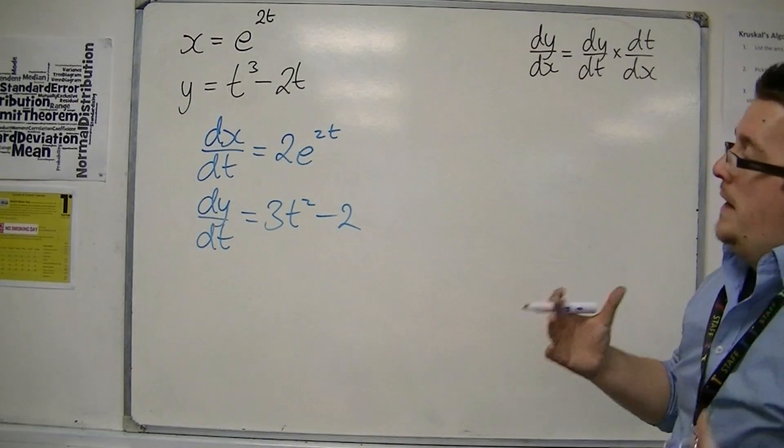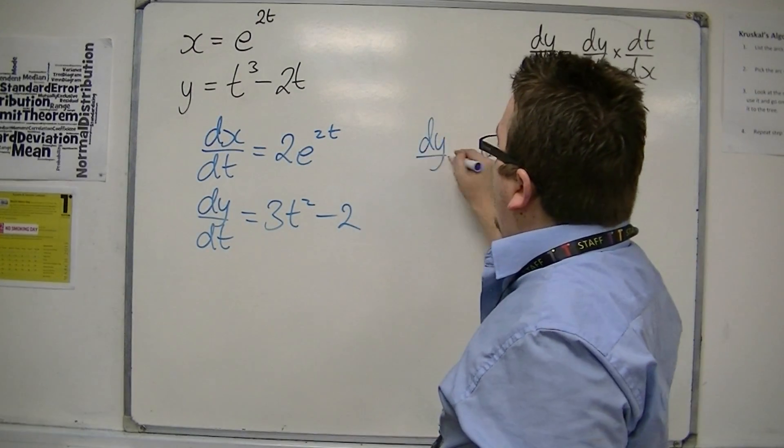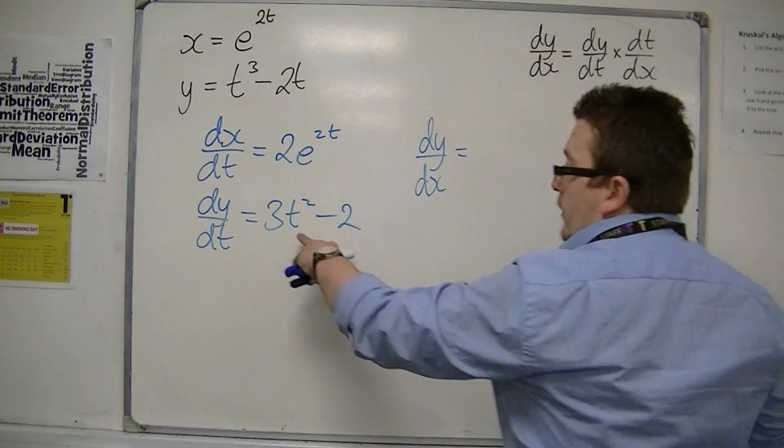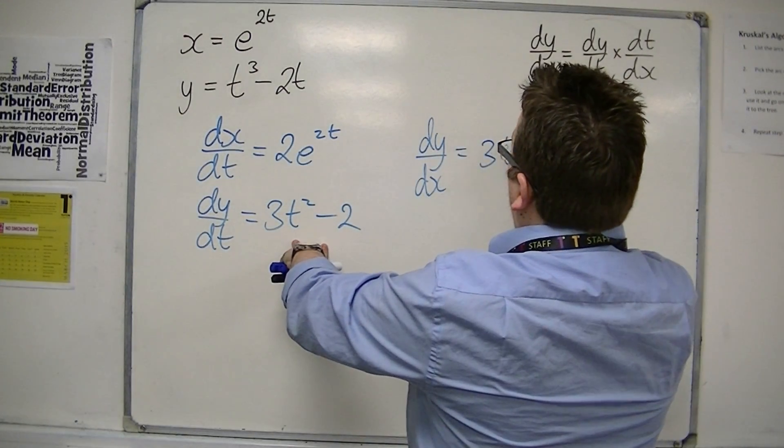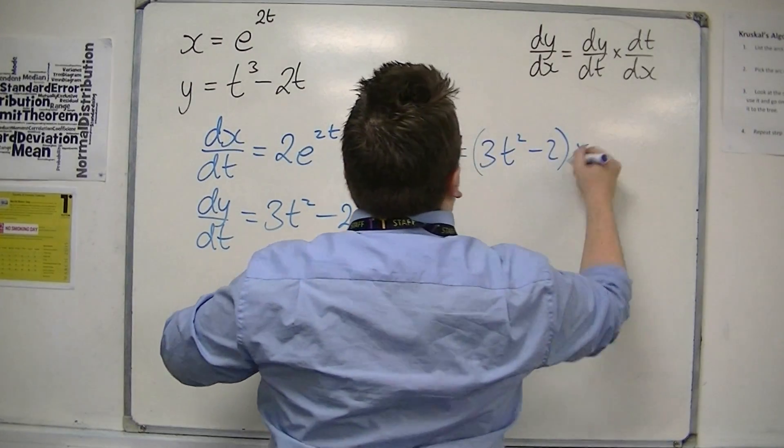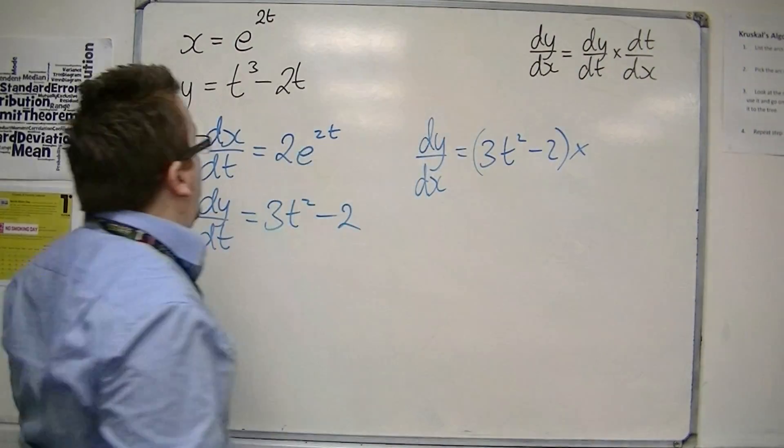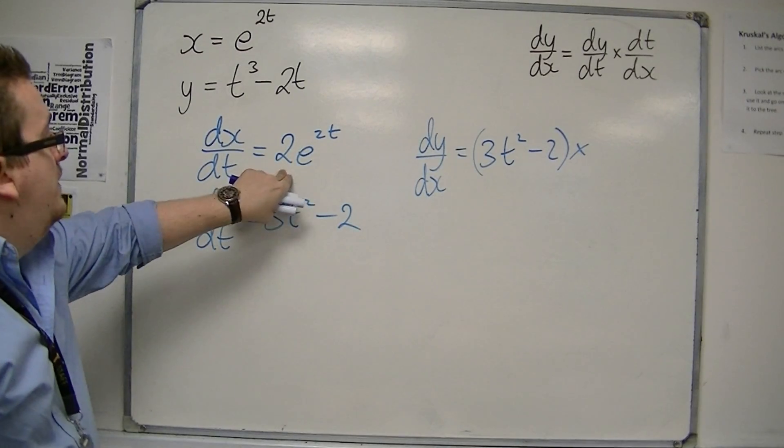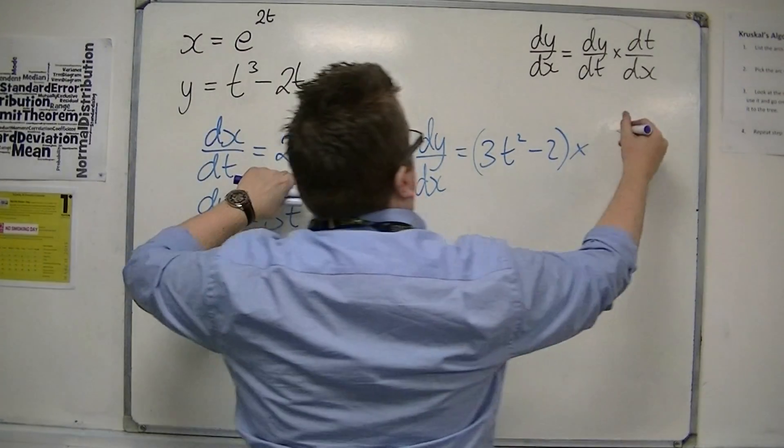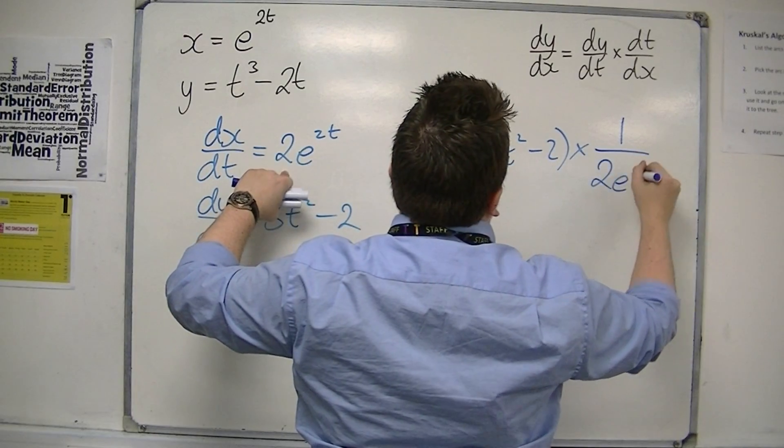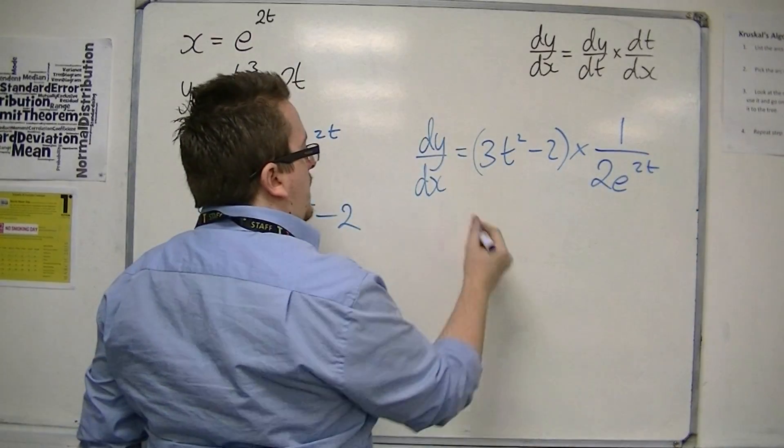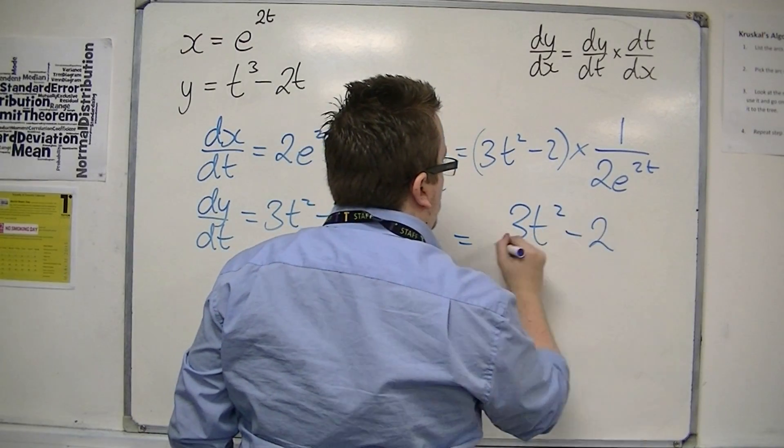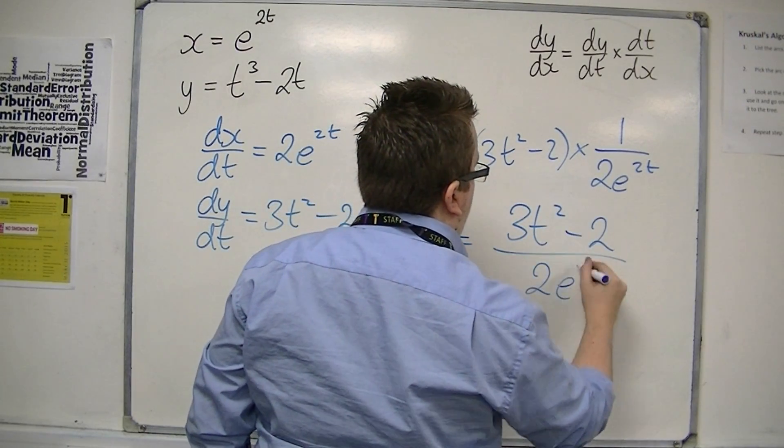So that means that dy/dx is dy/dt, this one, 3t squared minus 2, times by dt/dx. Now dt/dx is 1 over dx/dt, so 1 over 2e to the 2t.